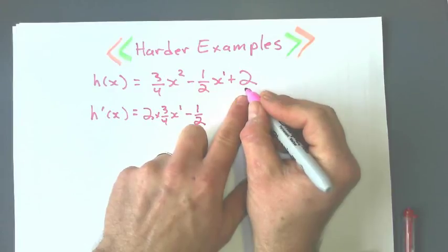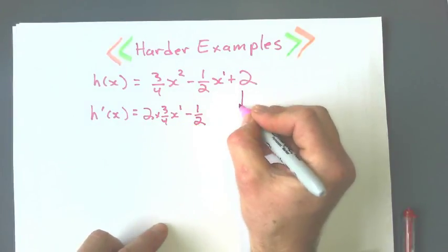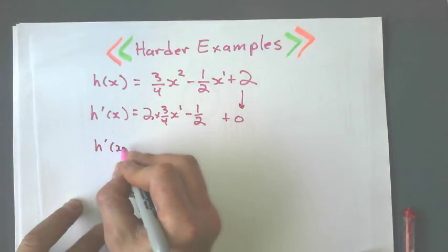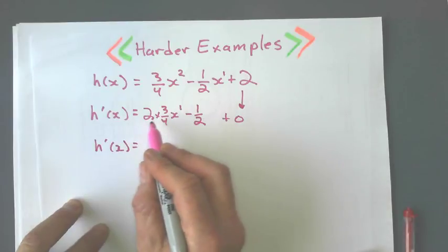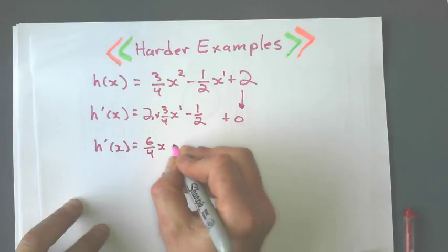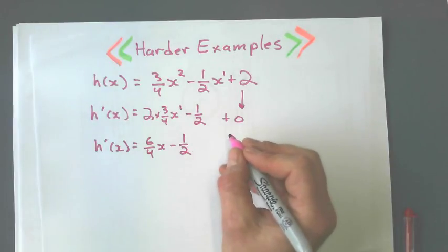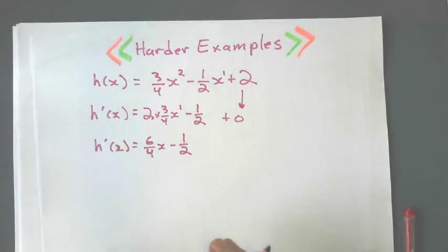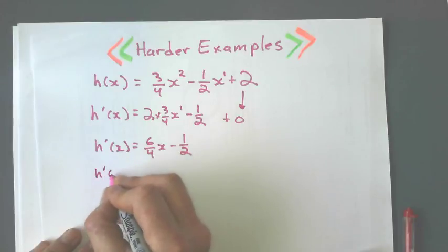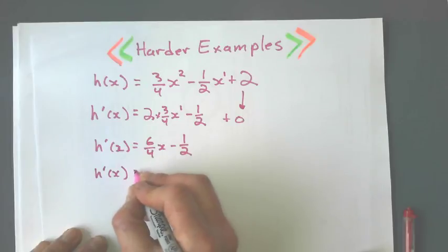And I'll work that out in a little bit. Here, my exponent is 1. 1 times 1 half is just 1 half. And differentiating a constant term turns to 0. So this, I don't do anything with that. It just turns to 0. Now we've got to do some fraction work. 2 times 3 quarters. That's 6 quarters x minus 1 half. If it's 0, I don't have to rewrite it.